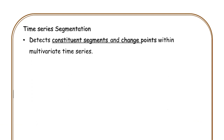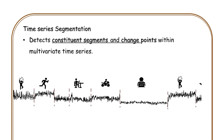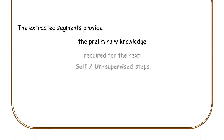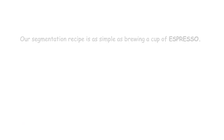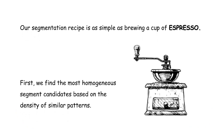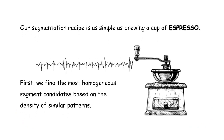Time series segmentation detects constituent segments and change points within multivariate time series. The extracted segments provide the preliminary knowledge required for the next self-supervised or unsupervised steps. To do the segmentation, first we find the most homogeneous segment candidates based on the density of similar patterns.